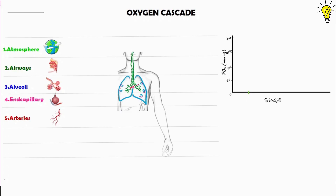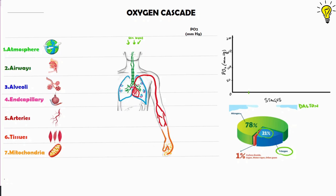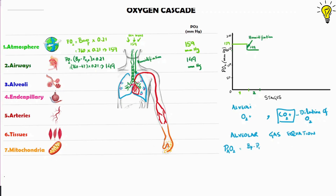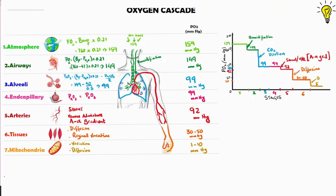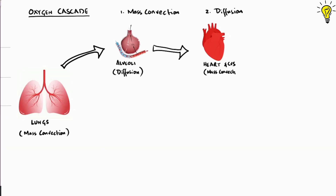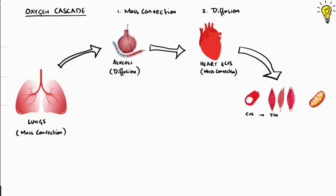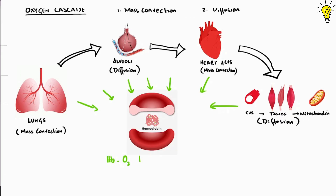Hey guys! Today we are starting a series on Oxygen. This episode is a brief introduction to the Oxygen Cascade. As we go along, we will integrate knowledge of Oxygen Cascade with rational understanding of types of hypoxia and how we can wisely improve the prognostic outcomes. So stay tuned as we embark on the journey of Oxygen. Let's begin.